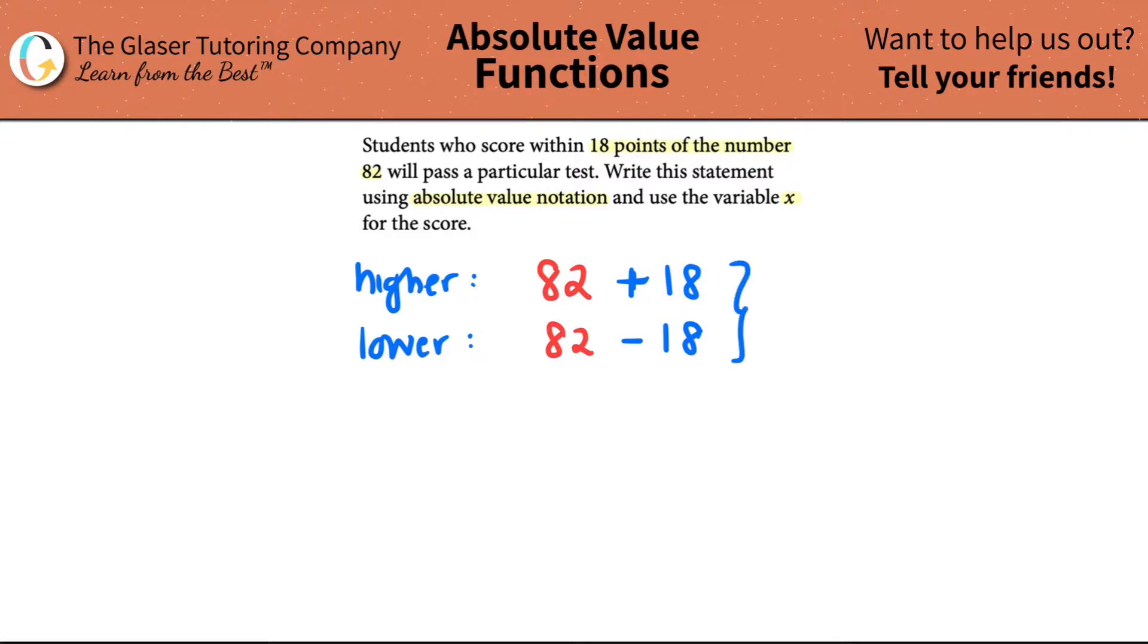Any of these is true so x is going to be equal to these two things, right, which is using the variable x as the actual score. So the score that they're going to get just has to be either 82 plus 18 or 82 minus 18.